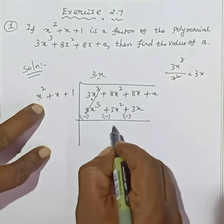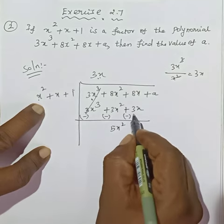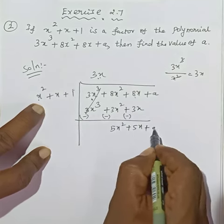This is cancelled. Sign change: 8x squared minus 3x squared gives 5x squared. Then 8 minus 3 is 5x, plus a. Again, we continue dividing.